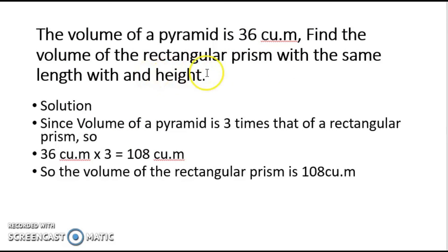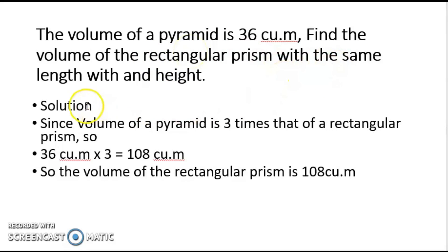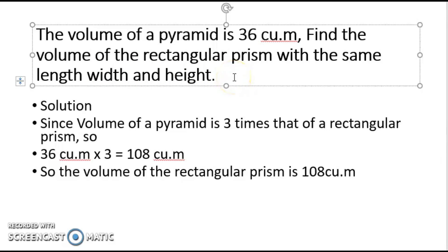Let's have an example: the volume of a pyramid is 36 cubic meters — find the volume of the rectangular prism with the same length and height. Since the volume of a rectangular prism is 3 times that of the pyramid, 36 cubic meters times 3 equals 108 cubic meters. So just multiply the pyramid's volume by 3 to get the rectangular prism's volume with the same dimensions.